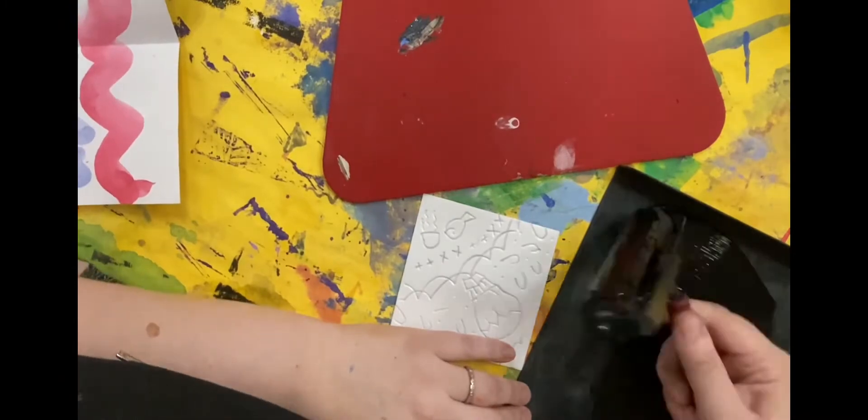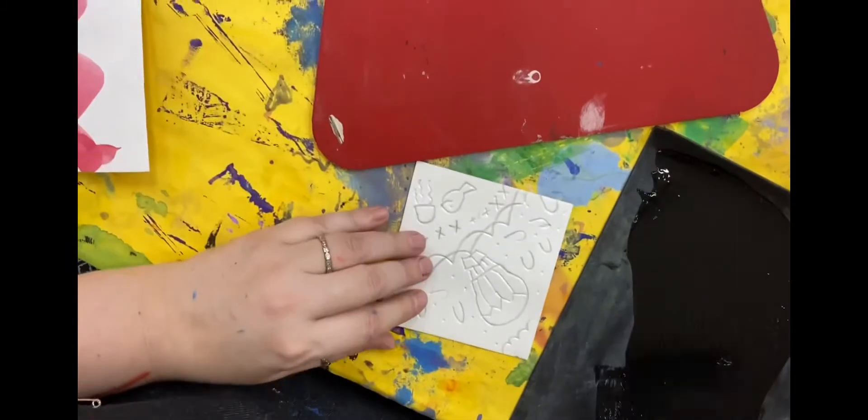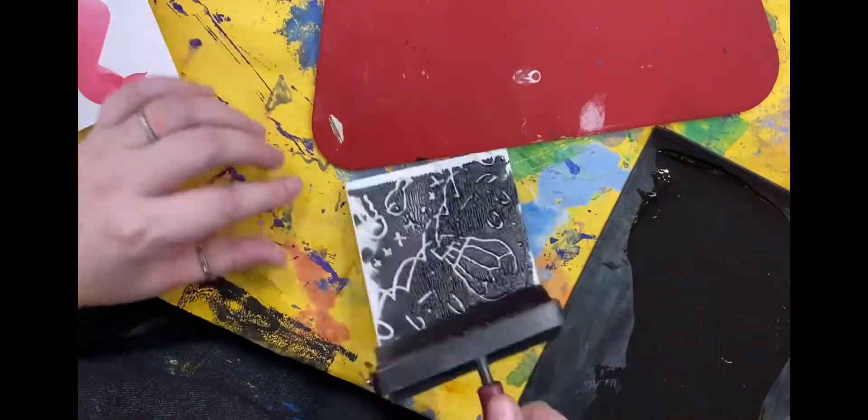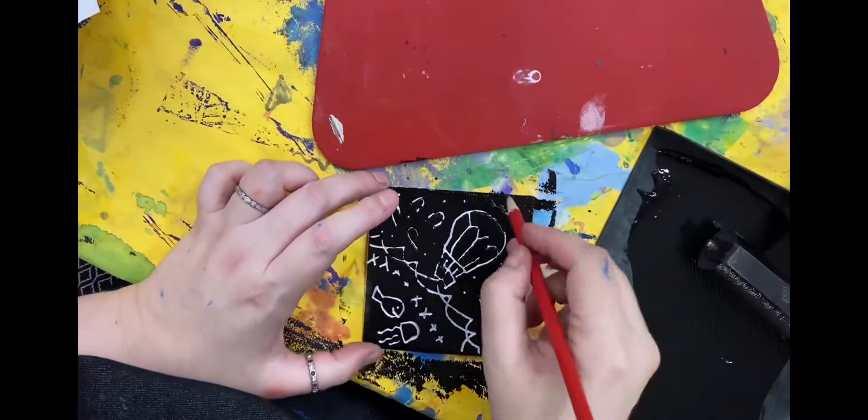Then you're ready to print. With the brayer, gently roll the ink over the styrofoam, up and down and side to side, covering the entire styrofoam without getting too much ink into the lines that you've already drawn.